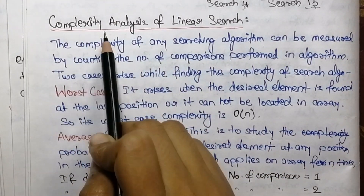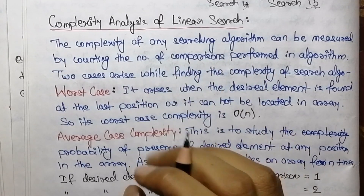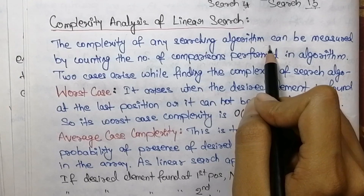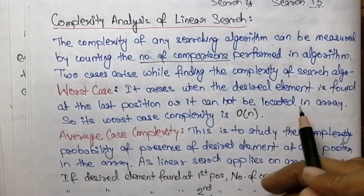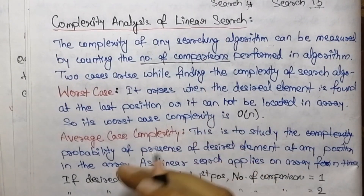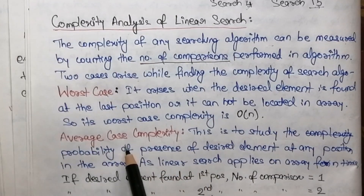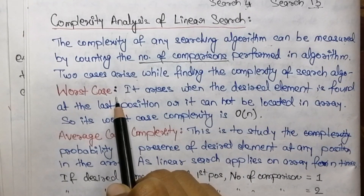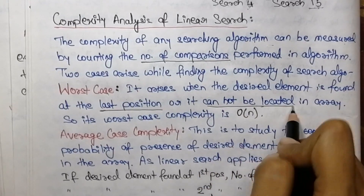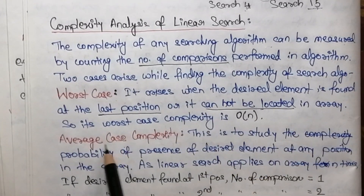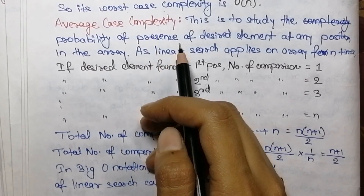The next topic is the complexity analysis of linear search. In a searching algorithm, the key operation is comparison, so the complexity can be measured by counting the number of comparisons performed. While finding the position of a given element, two cases arise: the worst case and the average case. The worst case is when we find the desired element at the last position or it cannot be located — in both cases the worst case complexity is O(n).